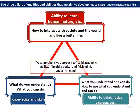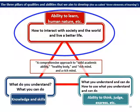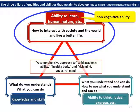The guidelines for the course of study revised in 2017 for elementary and junior high schools set three pillars of qualities and abilities — the so-called three elements of learning to be developed in students. The three pillars are: knowledge and skills; ability to think, judge, and express; and ability to learn and human nature — of which ability to learn and human nature can be described as non-cognitive ability.